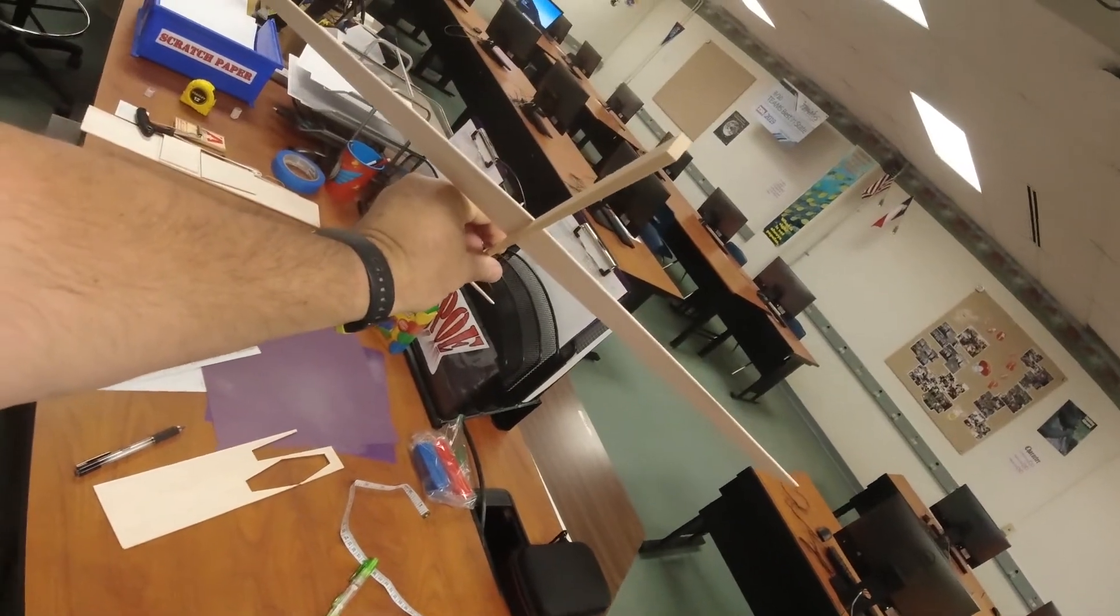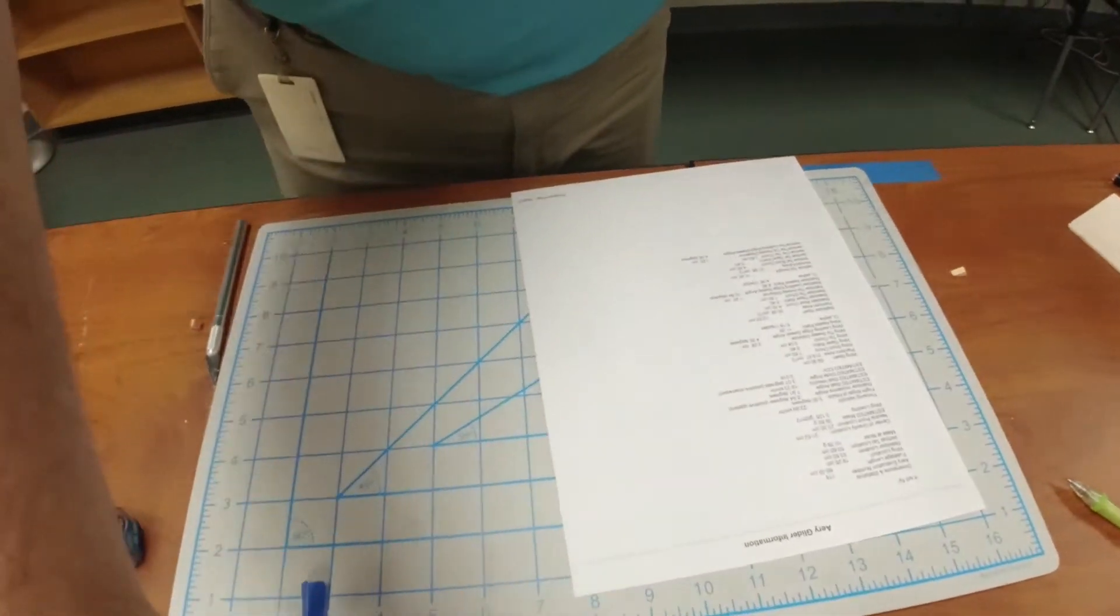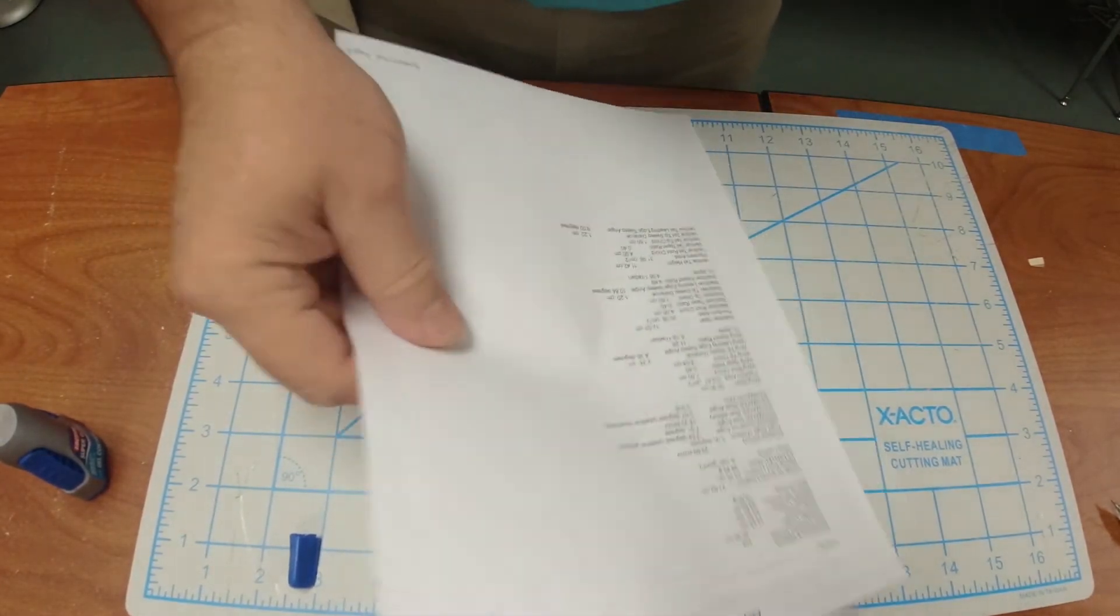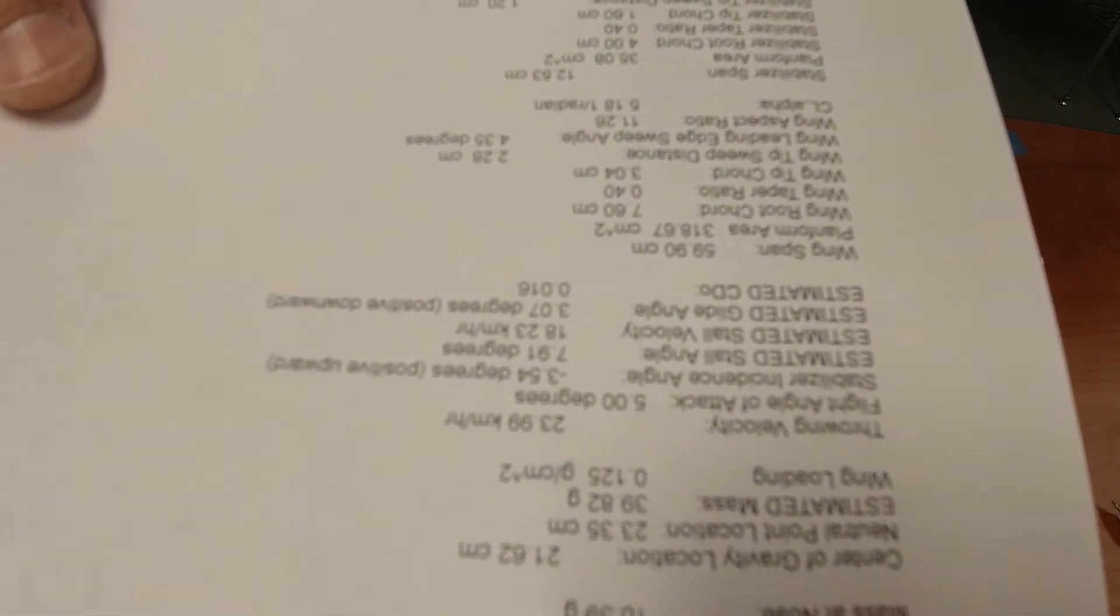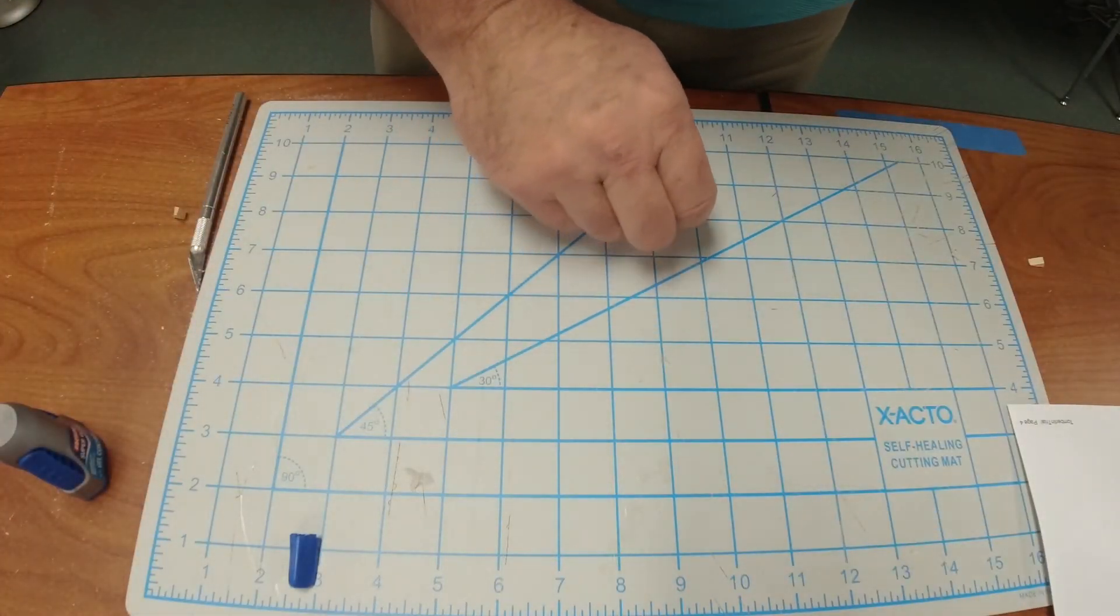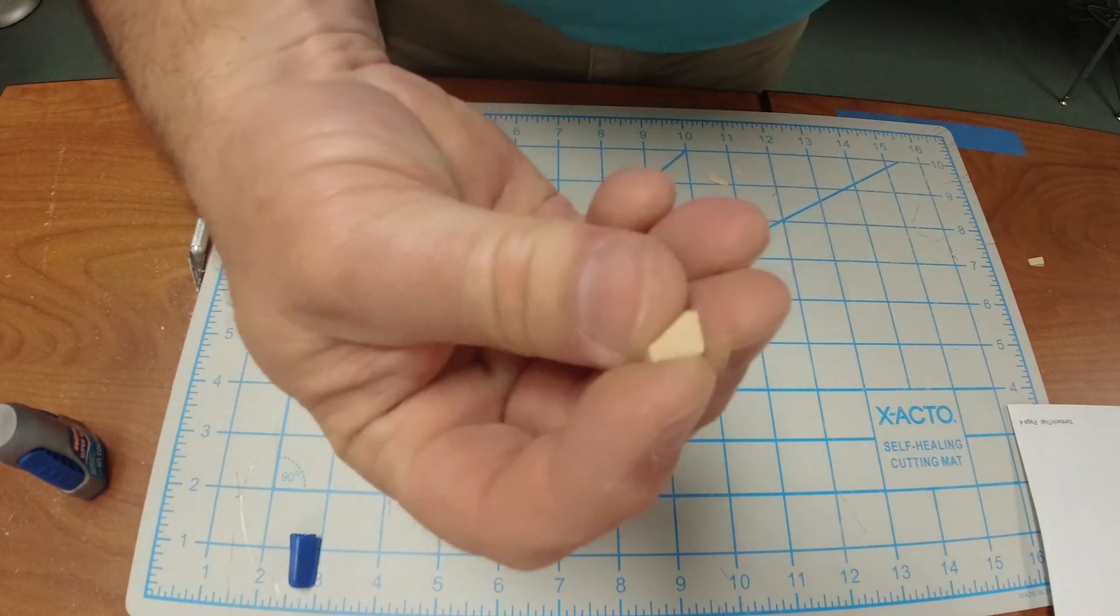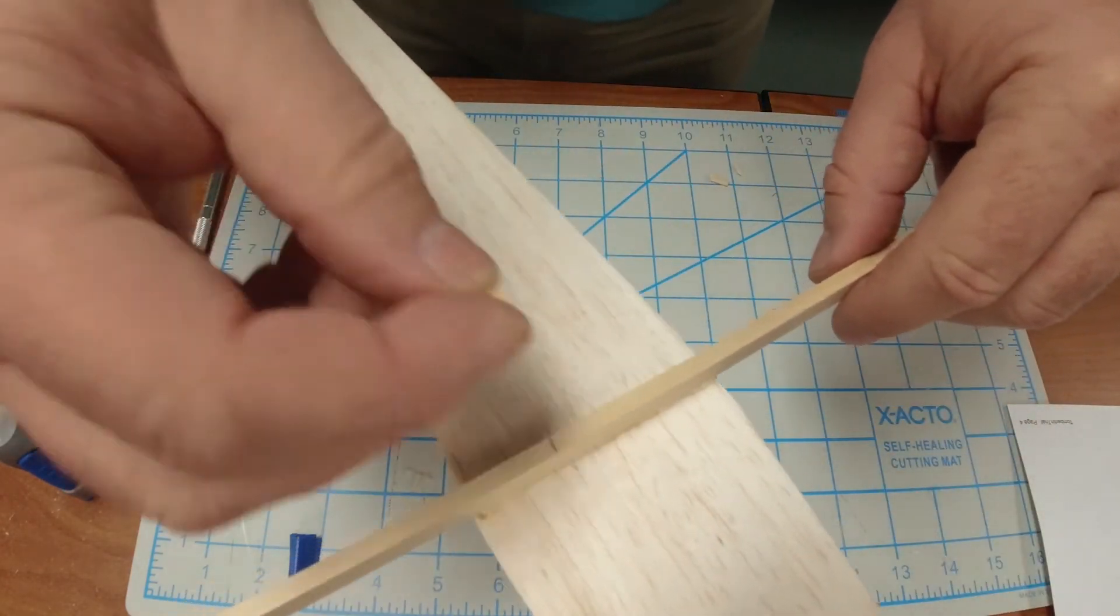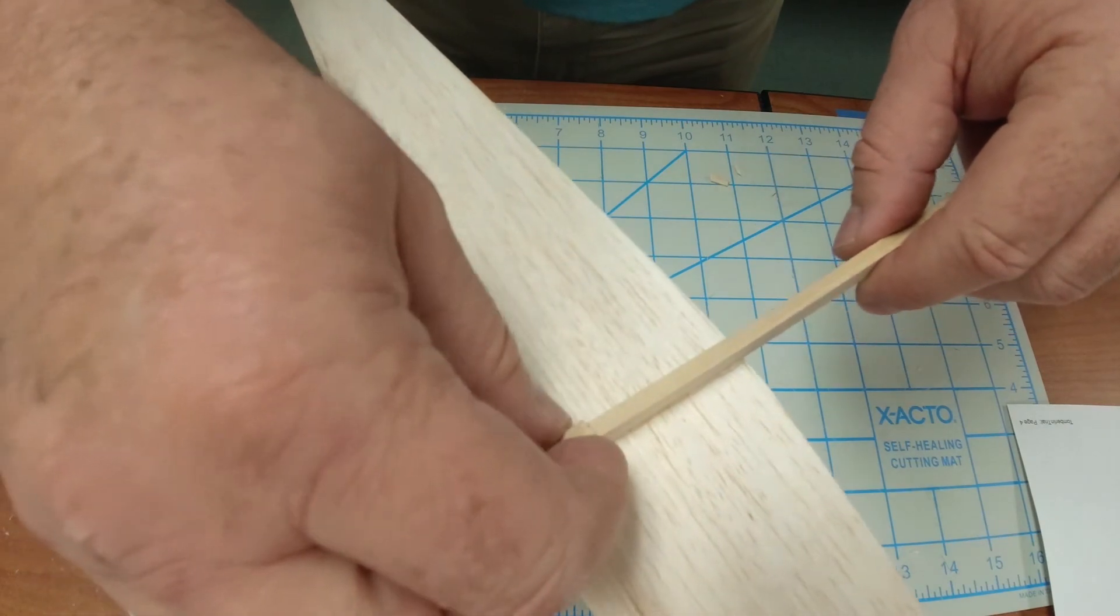Now our last part - if you look on here, it's going to say center of gravity location is 21.62. That's where we're going to put that little wedge. I've measured mine out, so 21.62 sits right here.